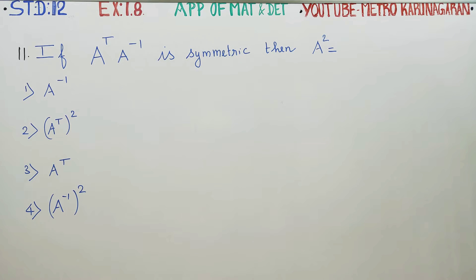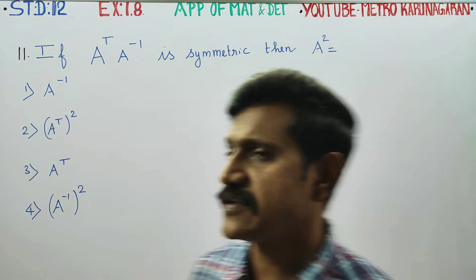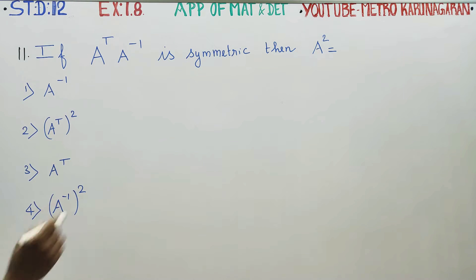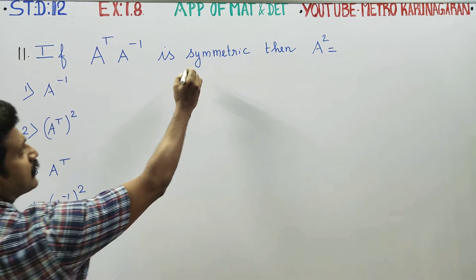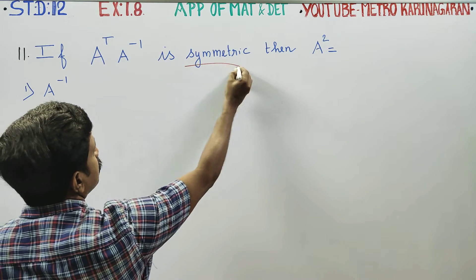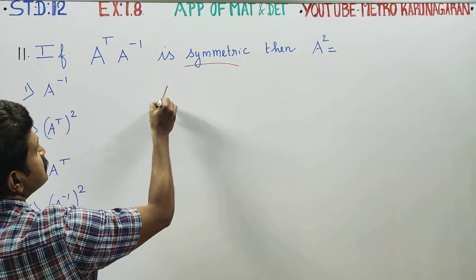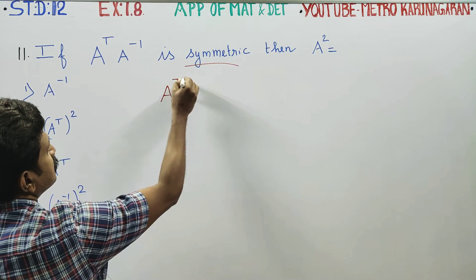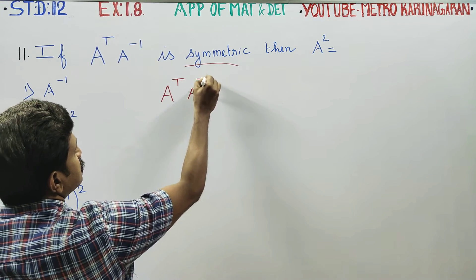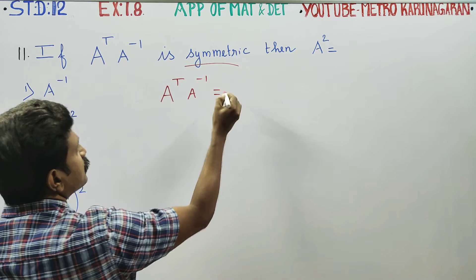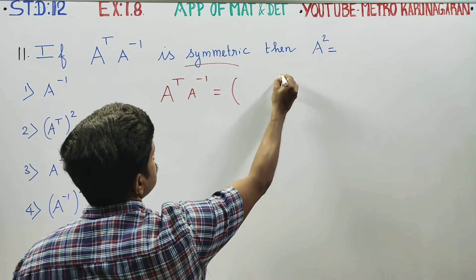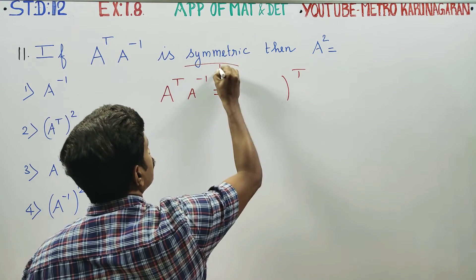Dear 12th standard students, in exercise number 1.8, sum number 11: if A transpose into A inverse is a symmetric matrix. If a matrix is symmetric, this answer is equal to its transpose — A transpose. This is the symmetric rule.